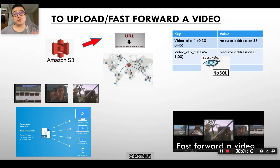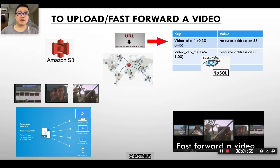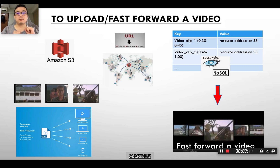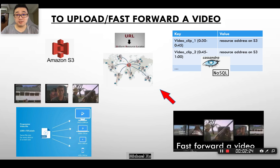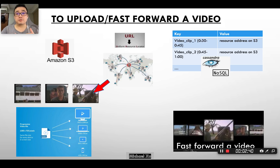We need to label the video with a resource address, for example the URL. So where are we going to store the URL information? We're going to store it in a NoSQL database that supports key-value pairs. With all this information, when a user performs fast-forwarding, on the user interface it's just selecting the thumbnail of the particular video clip. Using the key-value pair information for the video resource addresses, we know where to look for the video and we ask the video to be sent via the CDN networks to the particular user. This is how Netflix processes video for the user to fast-forward.